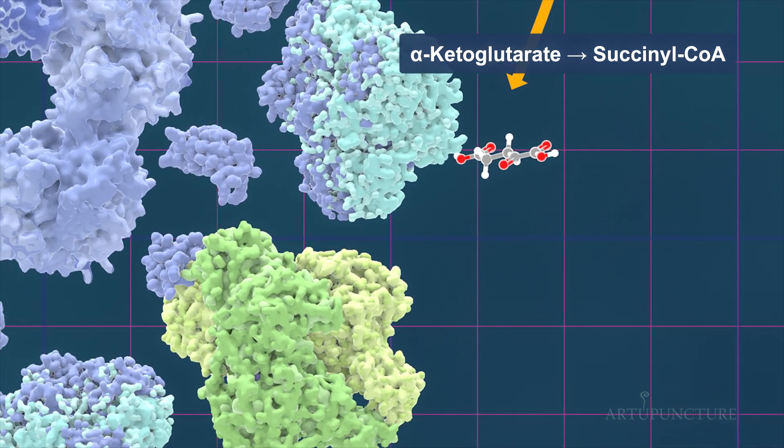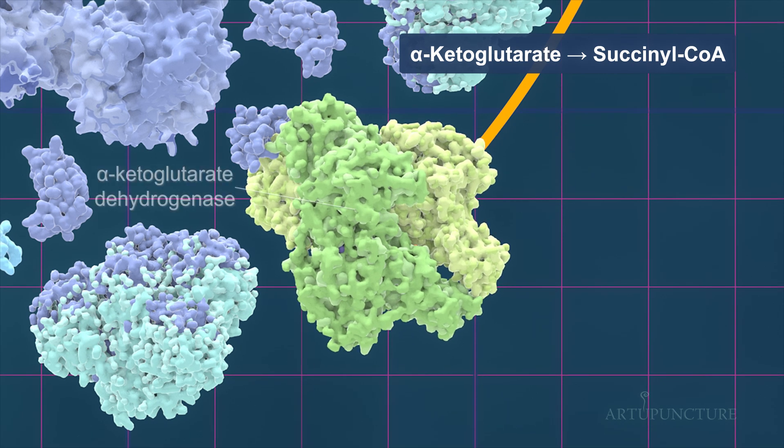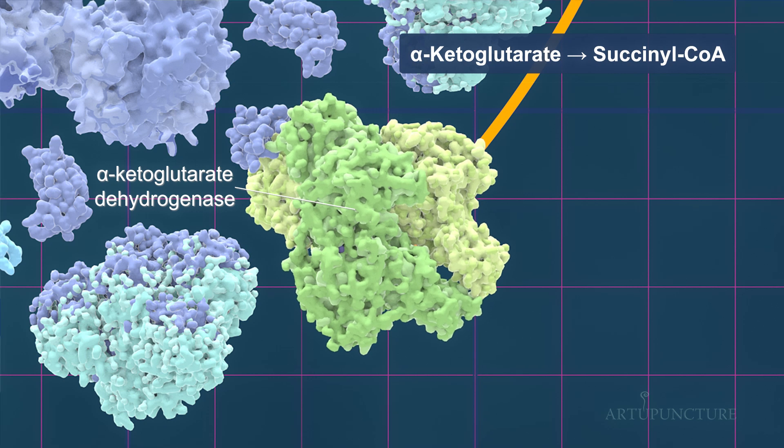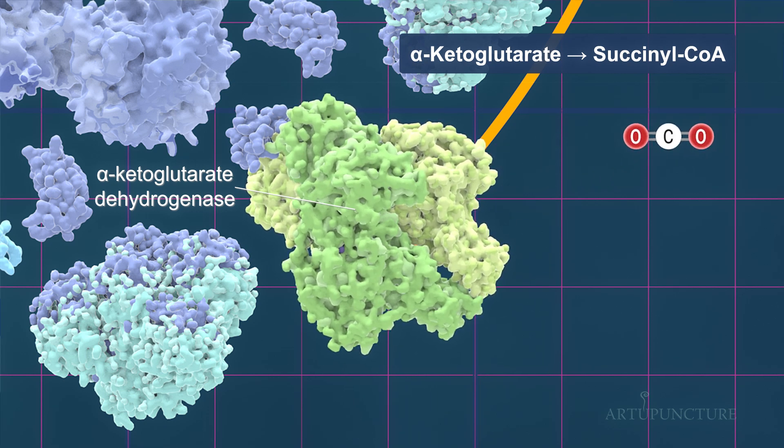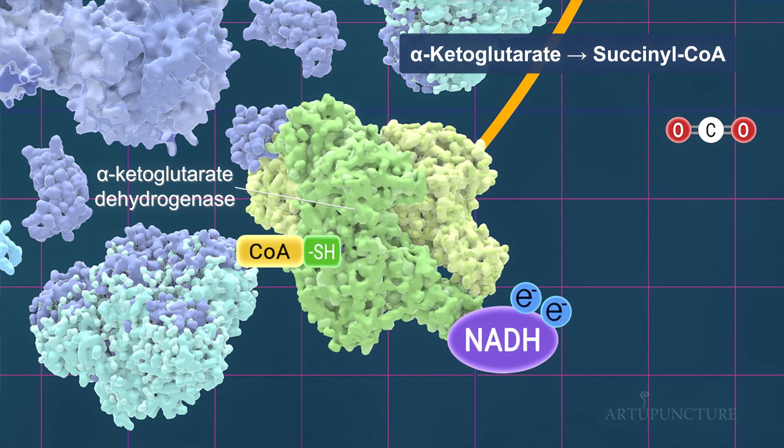The enzyme alpha-ketoglutarate dehydrogenase catalyzes the conversion of alpha-ketoglutarate to succinyl-CoA. During this reaction, another decarboxylation occurs, releasing carbon dioxide. The NADH produced then enters the electron transport chain.